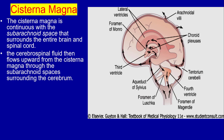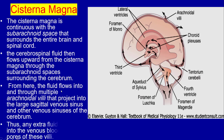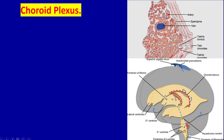The cisterna magna is continuous with the subarachnoid space that surrounds the entire brain and spinal cord. The cerebrospinal fluid then flows upward from the cisterna magna through the subarachnoid space surrounding the cerebrum, covering the whole cerebrum. From here, the fluid flows through arachnoid villi that project into the large sagittal venous sinus and other venous sinuses of the cerebrum, and any extra fluid empties into the venous blood through these villi.